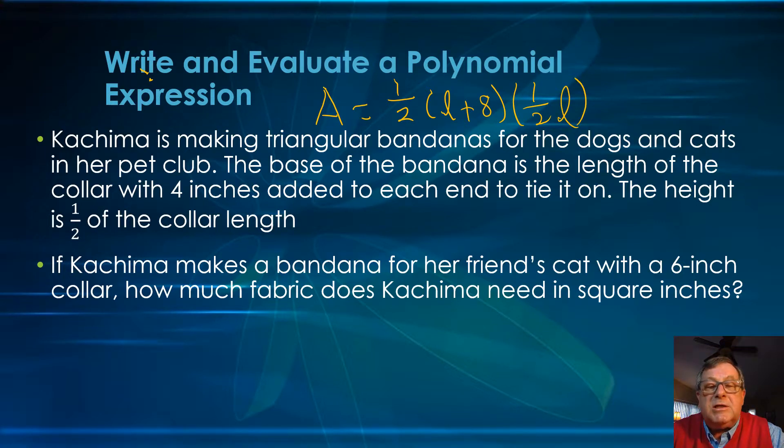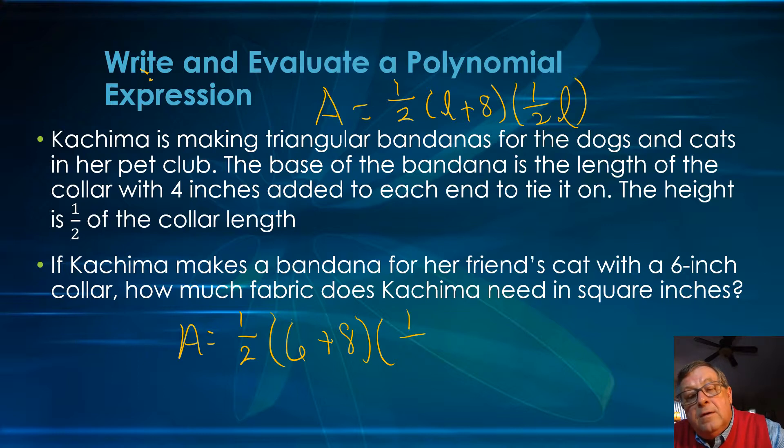Let's substitute in 6 inches, 6-inch collar for this cat, and we can solve this. The area then is one half times 6, the length of the collar, plus 8, still the same 4 inches on either end to tie it on, times one half times the length of the collar, which again is 6. Then we got one half, 6 plus 8 is 14, and one half times 6 is 3.